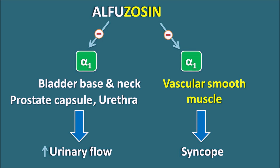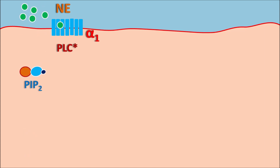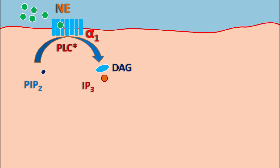Now let us see how this drug produces relaxation of the bladder as well as vascular smooth muscle. At target organs like the bladder or vascular smooth muscle, alpha-1 receptors are present — these are G protein-coupled receptors with seven transmembrane units. These alpha-1 receptors can be activated by norepinephrine, an important sympathetic mediator. When norepinephrine acts on alpha-1 receptors, it produces contraction. Norepinephrine binds to these alpha-1 receptors, which are coupled with the phospholipase C system, stimulating phospholipase C, which cleaves phosphatidylinositol bisphosphate (PIP2) into two important components. This IP3 can then act on internal calcium stores.